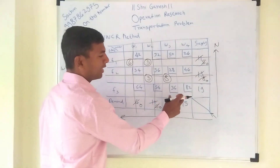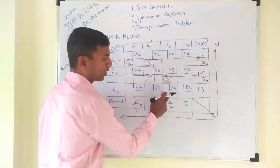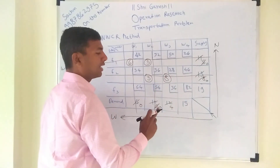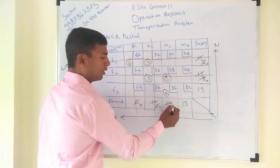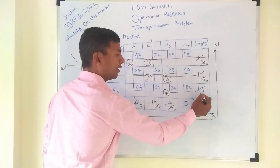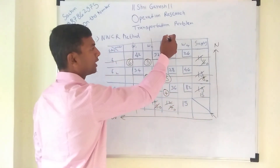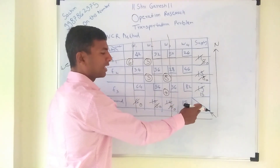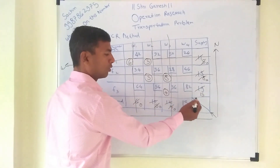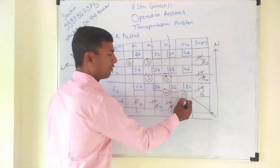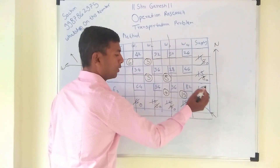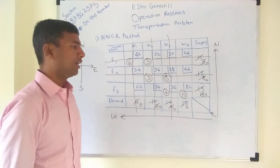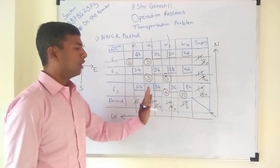Now what is remaining? Only cells 36 and 82. The top-most North-West corner is 36, having demand 4 and supply 19. The smallest one is 4. Write 4 in that cell — demand becomes 0, supply becomes 15. Warehouse 3 is done with their demand, so cancel that. Now this is the only cell remaining — both supply and demand are 15, so we allocate 15. Both become 0. There is no more sum remaining.